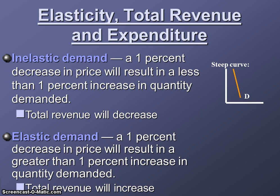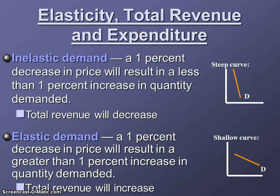Elastic demand is just the opposite. Elastic demand tells us that a 1% decrease in price will result in a greater than 1% increase in quantity demanded. Or, when price drops, total revenue will actually increase. The demand curve for an elastic demand product is going to be more shallow or more flat. With elastic demand, an increase in price would actually cause total revenue to decrease. Elastic means responsive — elastic means stretchy. Consumers are responsive to price changes. When price drops, a lot more people are going to buy the product, which will cause total revenue to increase. When price increases, a lot less people are going to buy, which causes total revenue to decrease.